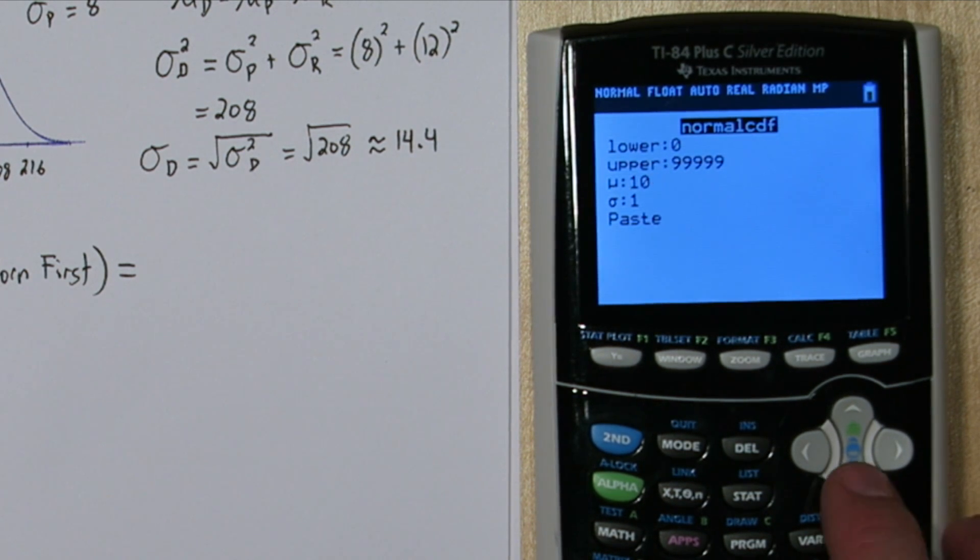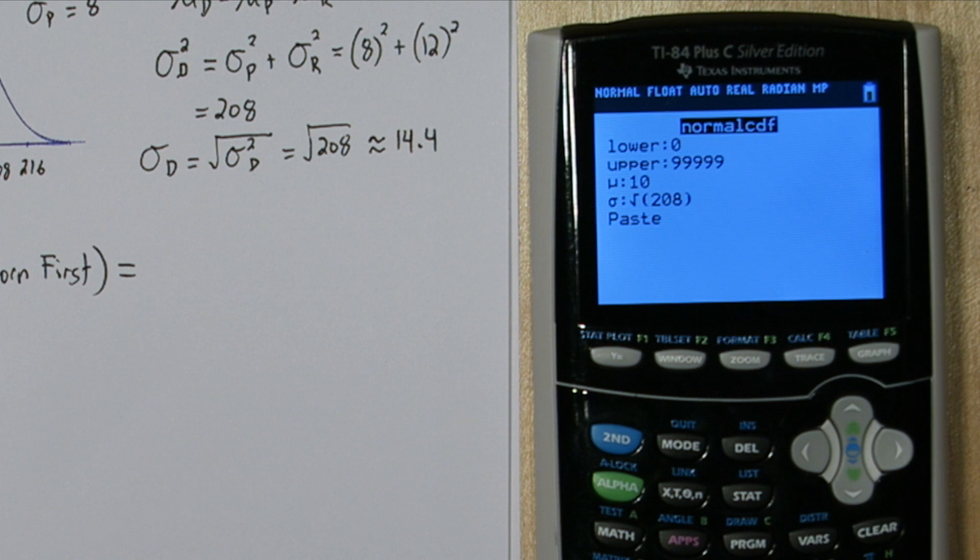For mean, we're going to put 10. And for standard deviation, we're going to put the square root of 208. Now we already calculated the standard deviation is about 14.4. But by putting the variance square rooted, we're going to use the exact value, and we don't have to worry about our rounding of the 14.4.